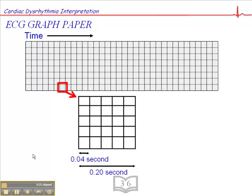So if we look at the graph paper, first of all with cardiac rhythm interpretation, specifically interpreting heart rhythms, not looking at 12-lead ECGs but heart rhythms.